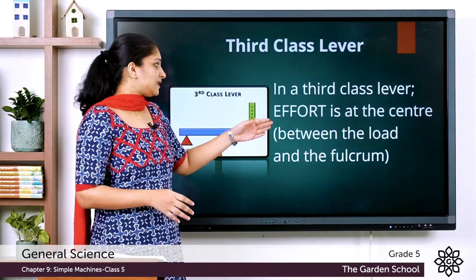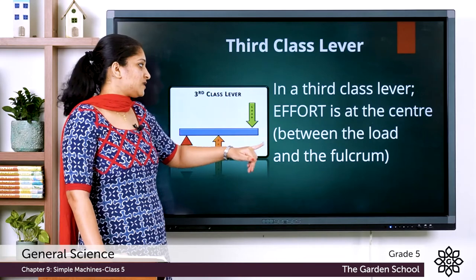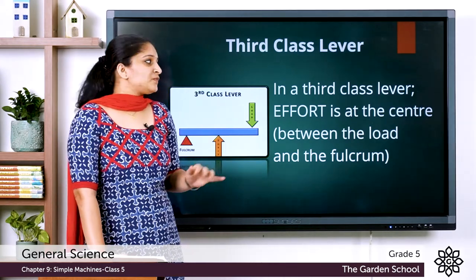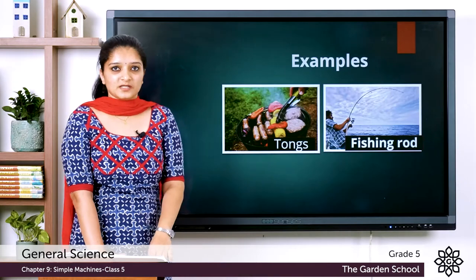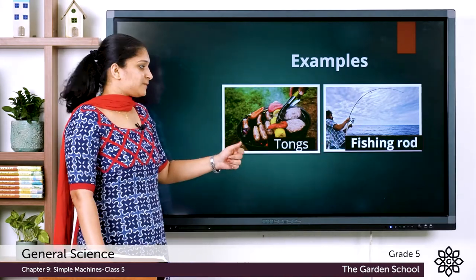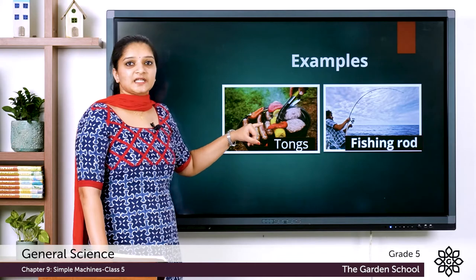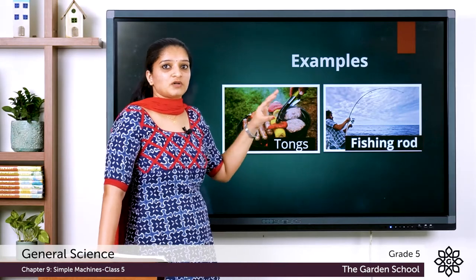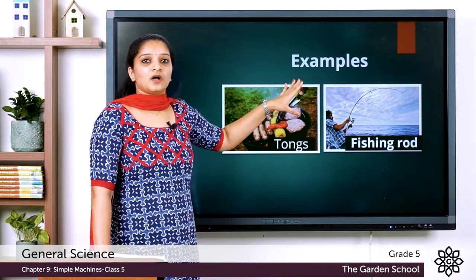Now let's see what a third class lever is. In a third class lever, one of the components — that is effort — lies at the center. If you look at this picture, you can observe that the effort lies at the center, keeping load and fulcrum at both ends. The examples include tongs used for grilling and a fishing rod. For tongs, the vegetable being grabbed is the load, the point at which the person applies pressure is the area of effort.